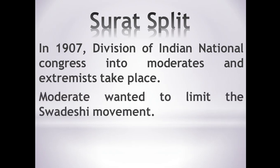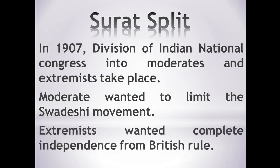The moderates wanted to limit the Swadeshi movement, whereas the extremists wanted complete independence from British rule. This division in 1907 marks the first key event in India's struggle for freedom.